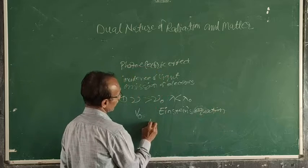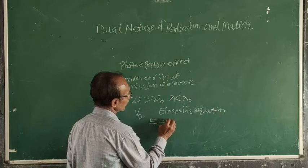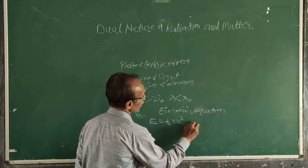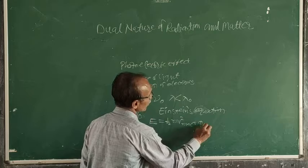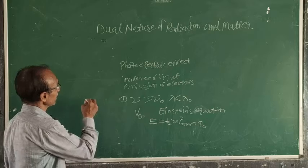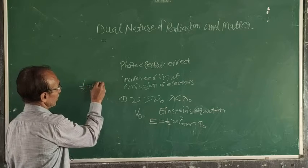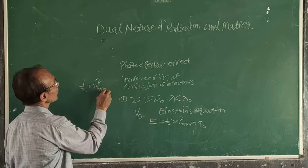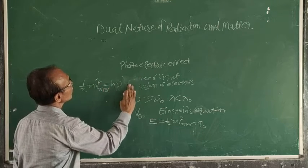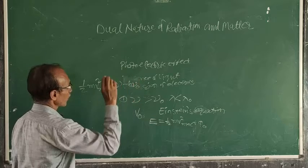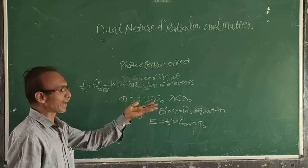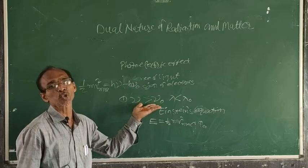Einstein's equation states that E is equal to ½mv²_max plus φ₀. From this, we came to know that ½mv²_max is equal to hν minus hν₀. From this equation, we have proved that ν must be greater than ν₀.